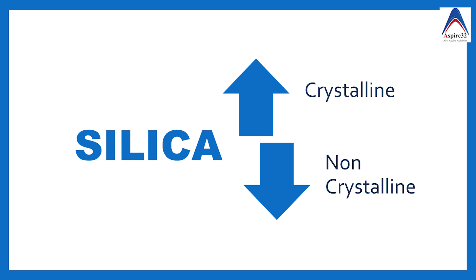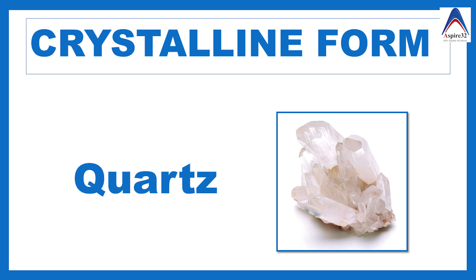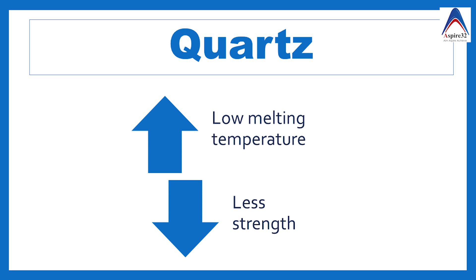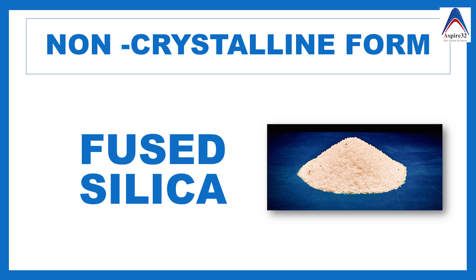Silica is available in two forms: crystalline and non-crystalline. The crystalline form is used mostly in investment materials, dental cements, and composites. The advantage of the crystalline form — for example, quartz — is that it has a low melting temperature, but its important disadvantage is that it has less strength. The non-crystalline form is actually used in dental ceramics, and that non-crystalline form is fused silica.